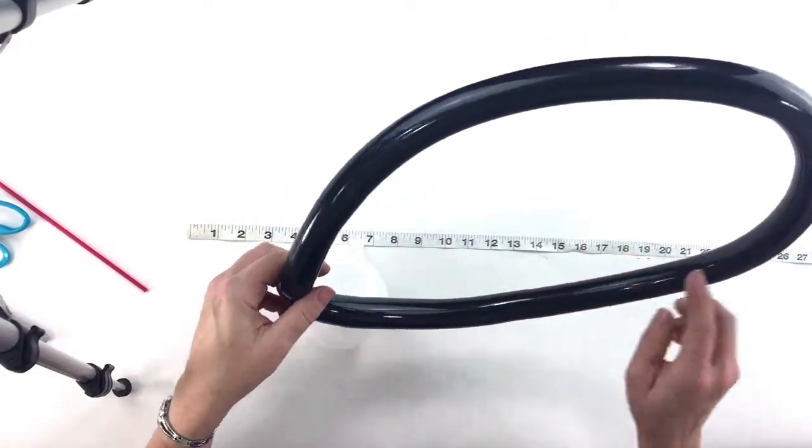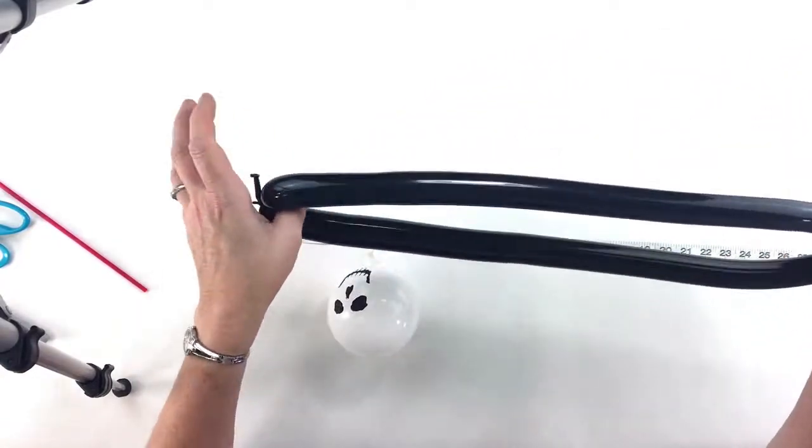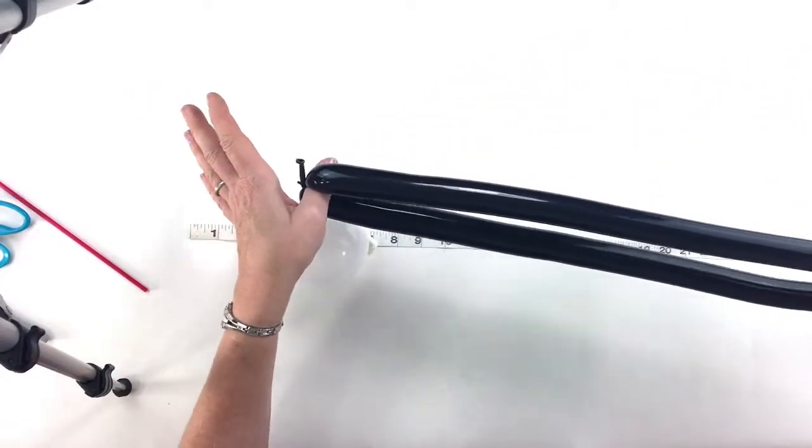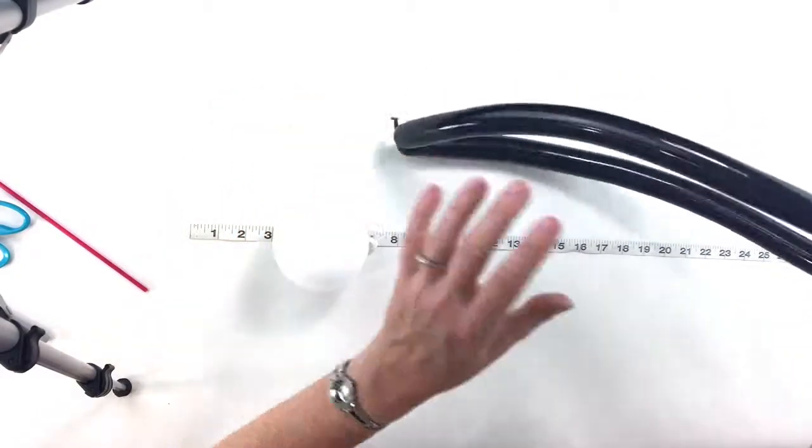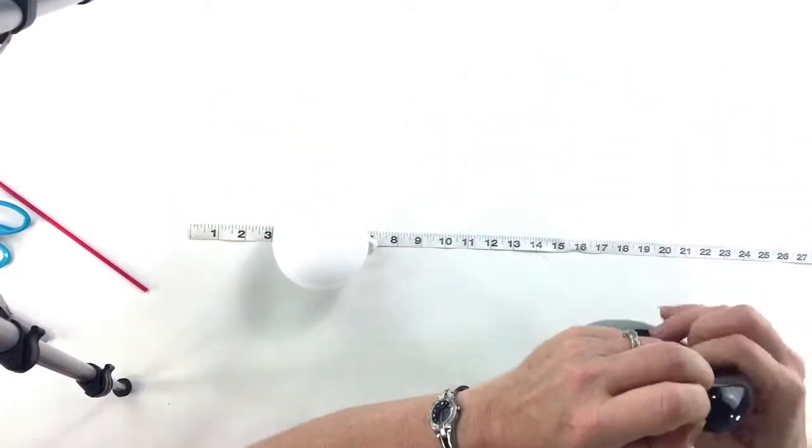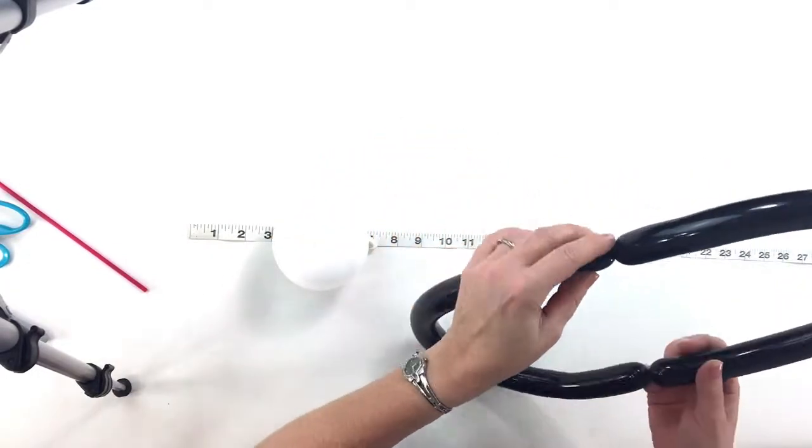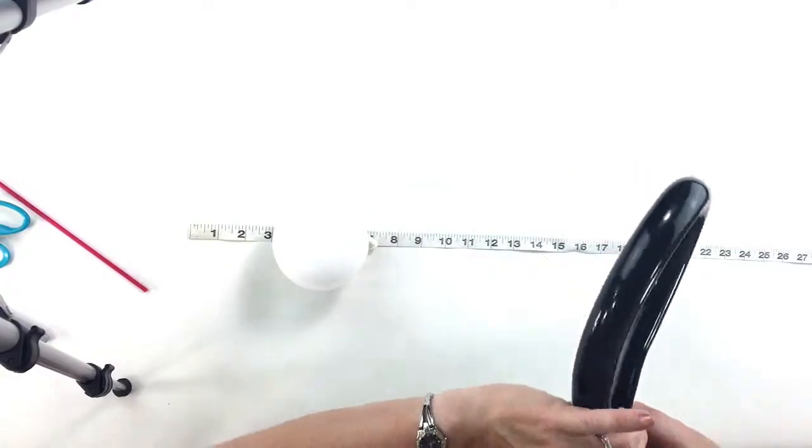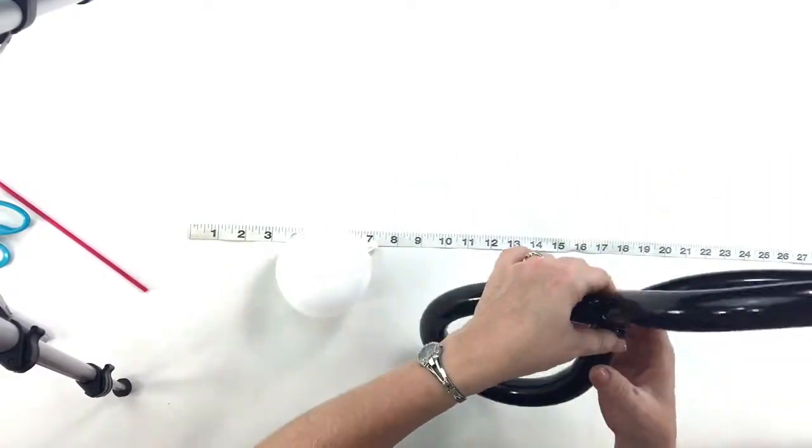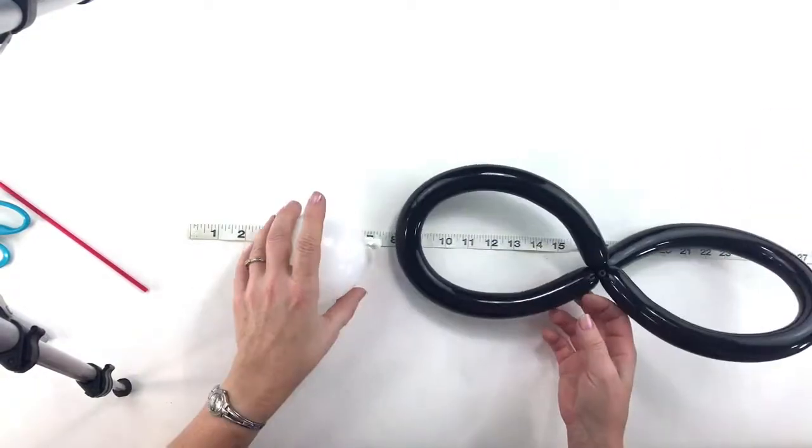Tie the ends together on your 160 and separate the balloon with your thumbs so you know where half of it is. Go clear up here and flip it around so there's a twist up here, and then bring this way down here and twist this together.